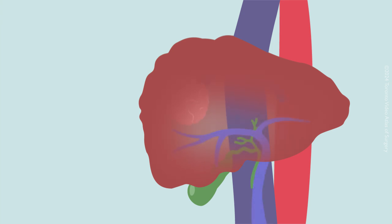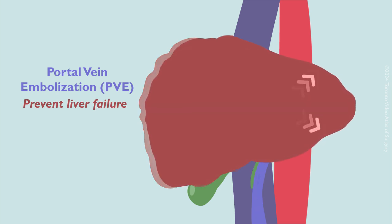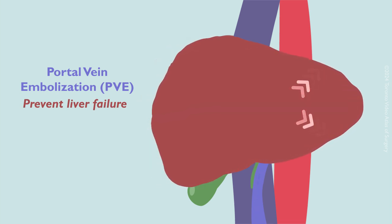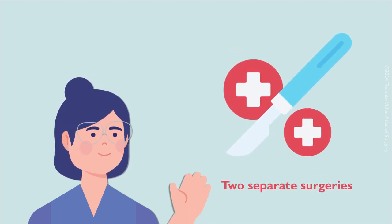In some high-risk cases, there is a chance of liver failure after the liver resection surgery. To reduce this risk, additional procedures such as portal vein embolization may be required to prevent liver failure. This procedure stimulates the growth of the liver portion that will be preserved after the resection. In these rare instances, liver resection may need to be performed in two separate surgeries.